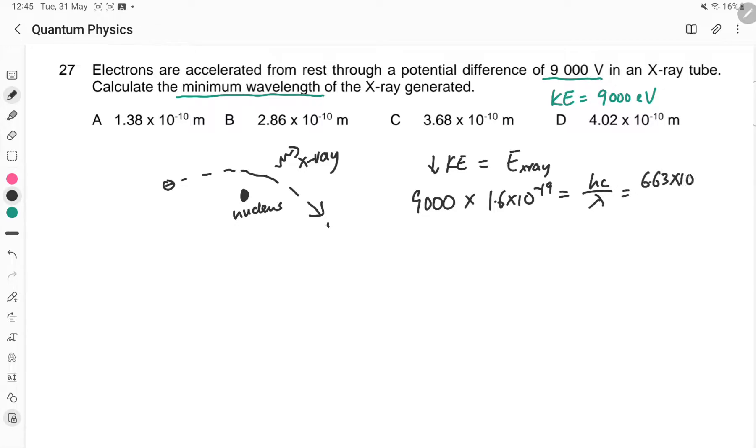So 6.63 times 10 to the power of minus 34 times 3 times 10 to the power of 8 divided by the lambda minimum. So we can see this lambda minimum is equals to, we rearrange the terms.